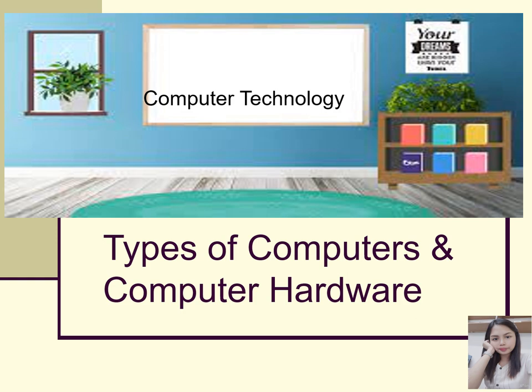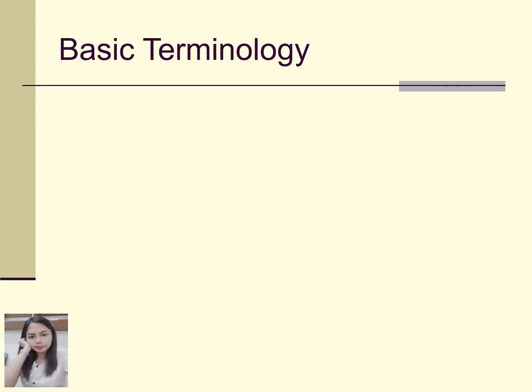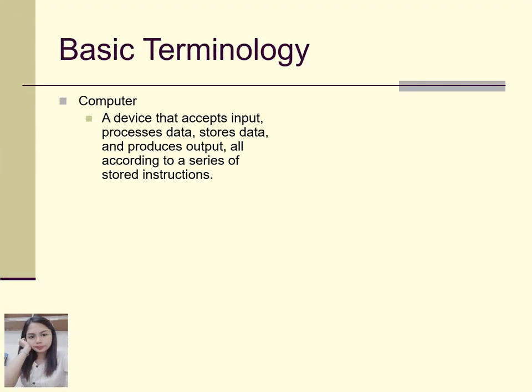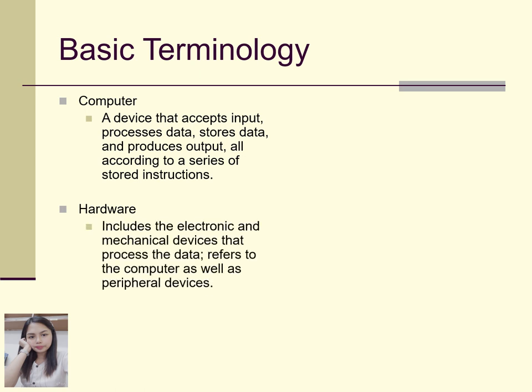Types of computers and hardware. A computer is a device that accepts input, processes data, stores data, and produces output, all according to a series of stored instructions. Hardware is one part of the computer that includes electronic and mechanical devices that process the data, and it refers to the computer as well as the peripheral devices.